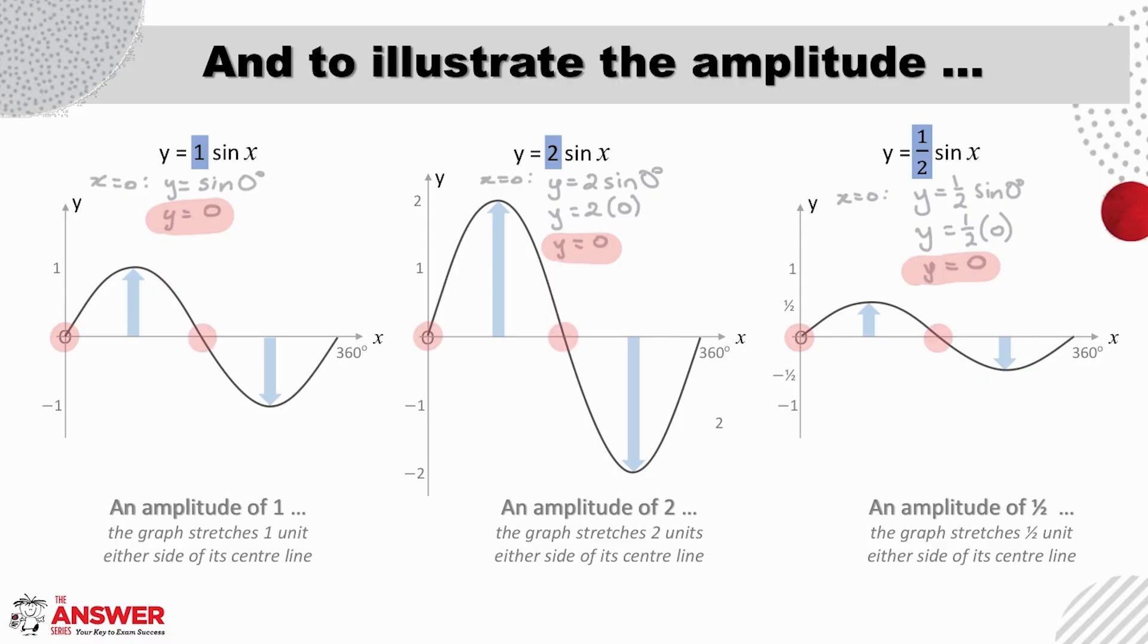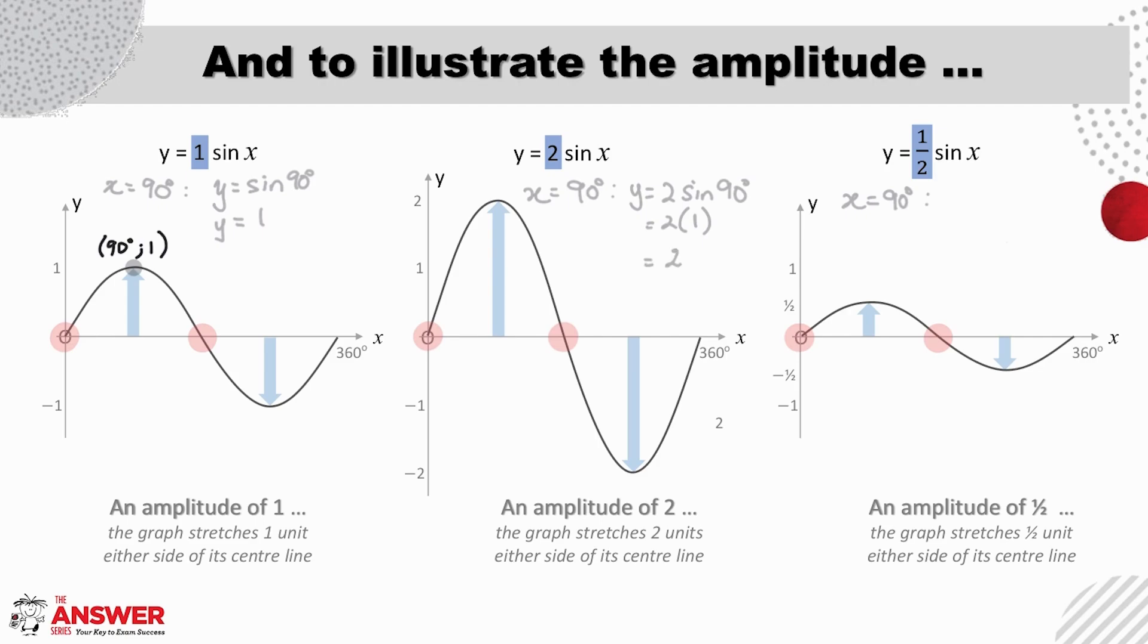So let's look at what happens in each case for when x is 90 degrees. Well here, y will be sine of 90, which is one. And for y equals two sine x, y will be two times sine of 90, which is two times one. And so y's value will be two. And for y equals a half sine x, y will be a half times sine of 90, which is a half times one. And therefore y's value will be a half.